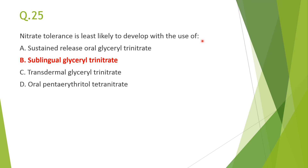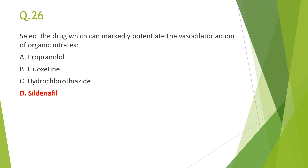Next: nitrate tolerance is least likely to develop with — answer B, sublingual glyceryl trinitrate. Tolerance develops when nitrate is present in the body for a long time. Sublingual glyceryl trinitrate acts rapidly and is eliminated rapidly, so chances of tolerance are less. Sustained-release oral glyceryl trinitrate, transdermal, and oral pentaerythritol forms act slowly and remain in the body longer, increasing chances of tolerance.